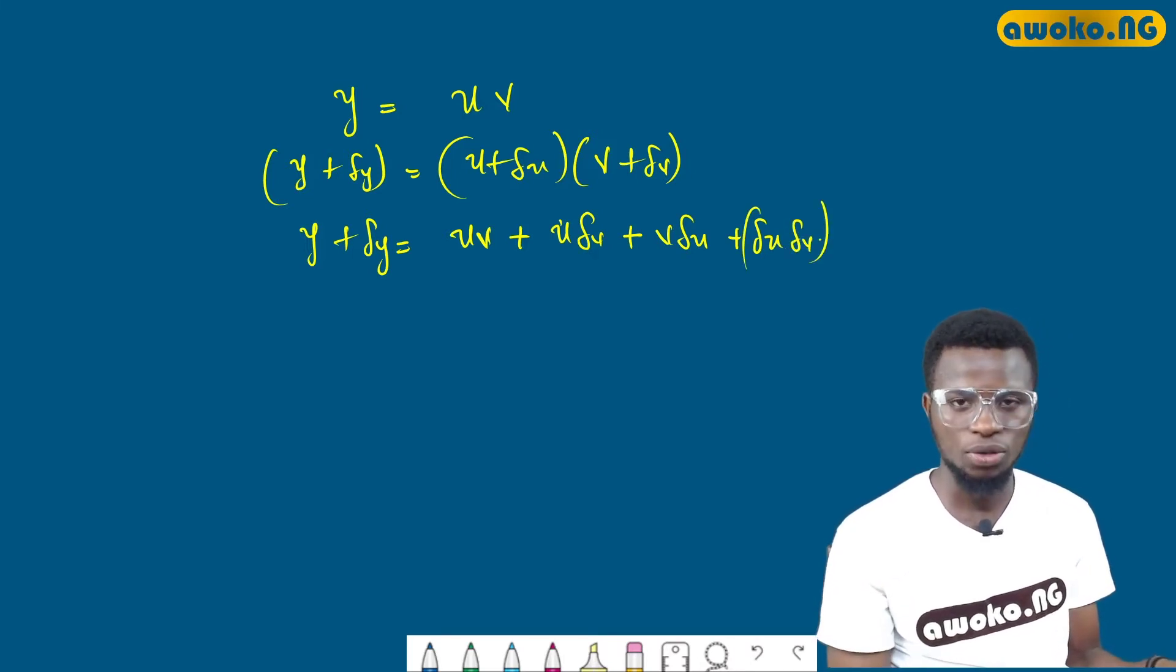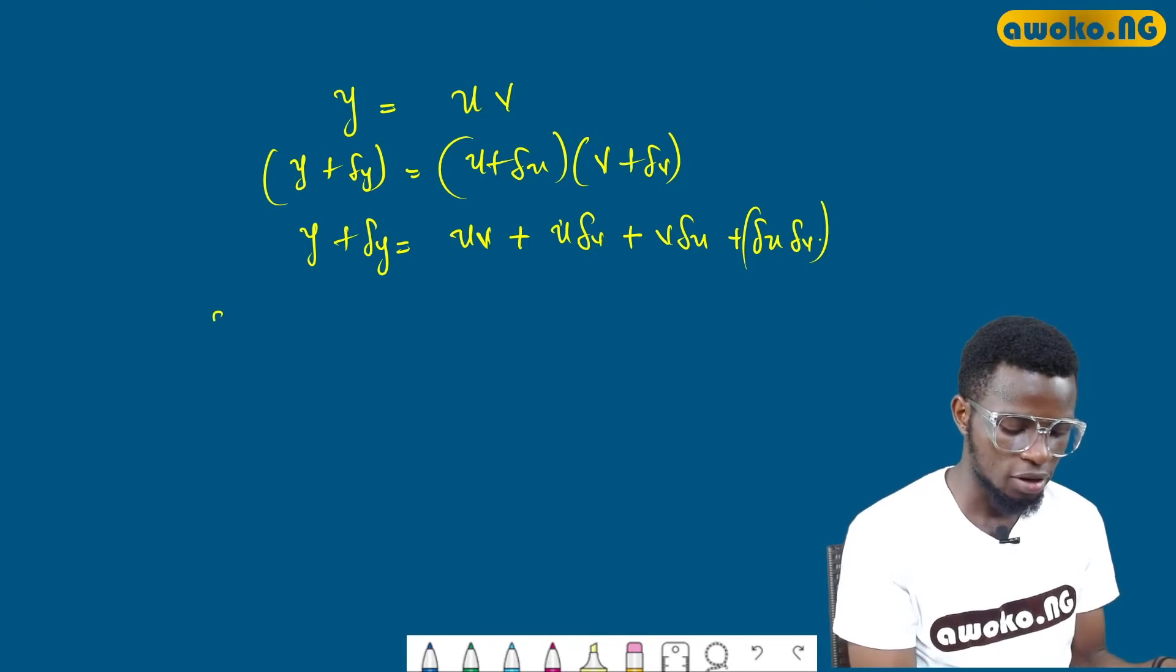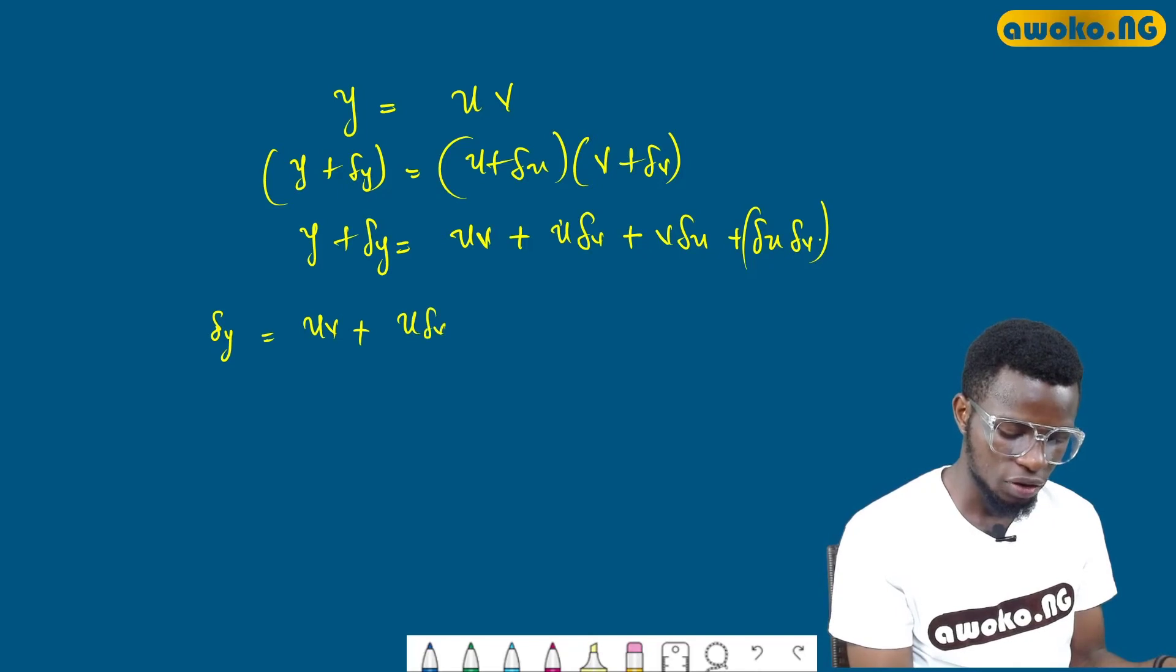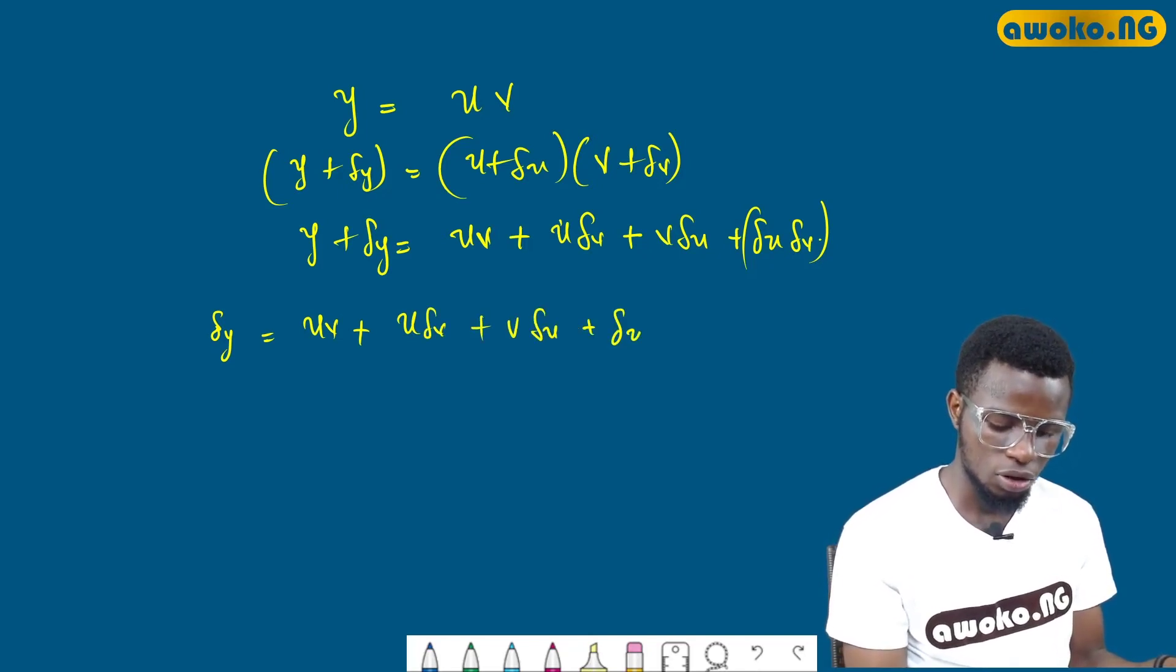Taking y to the other side, I have dy equals uv plus u(dv) plus v(du) plus du(dv) minus y.